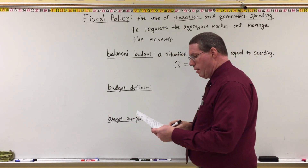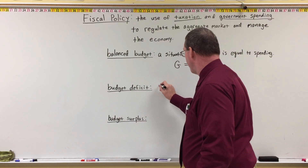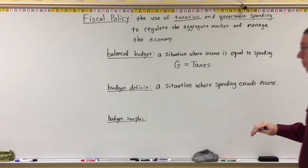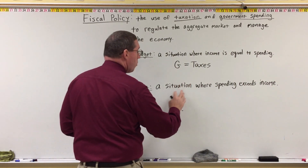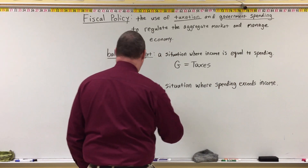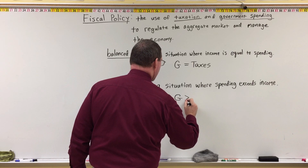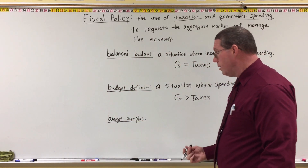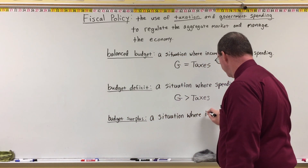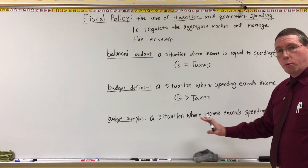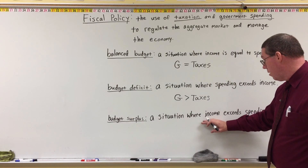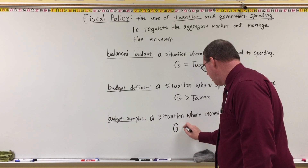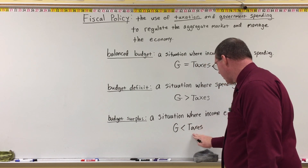A budget surplus is the opposite of a deficit — it's a situation where income exceeds spending. With a budget surplus, the taxes being received are greater than how much the government is spending, so government spending is less than taxes.